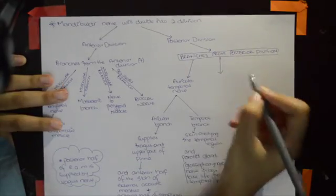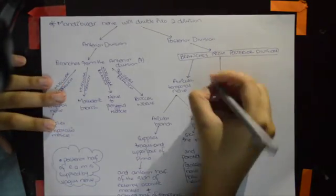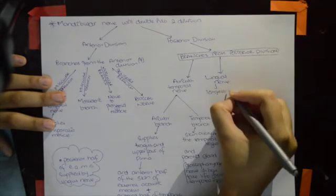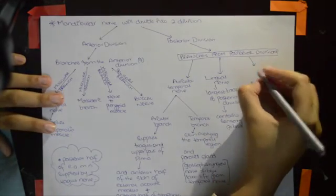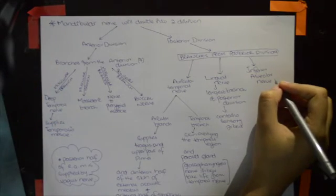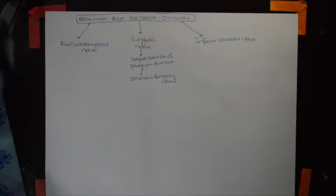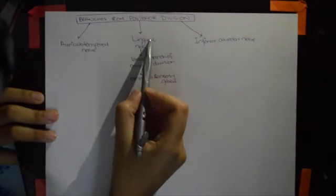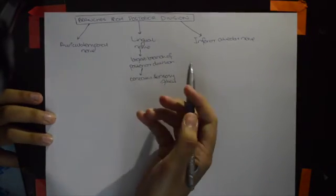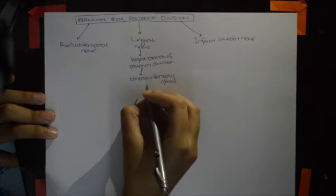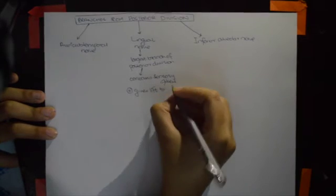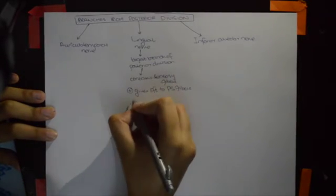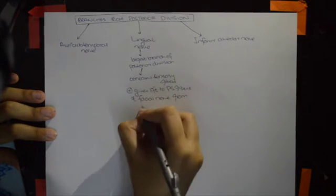The other main branches from the posterior division are the lingual nerve, which is the largest branch of the posterior division and contains sensory fibers, and the inferior alveolar nerve. The lingual nerve also carries parasympathetic fibers from the facial nerve, originating from the superior salivatory nucleus.